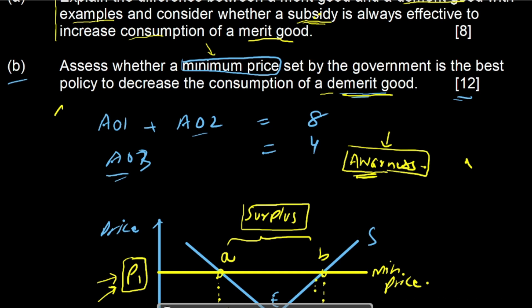For the final judgment, conclude that minimum price is a good way of controlling consumption of demerit goods, however it is not the best policy — because demerit goods are addictive and consumers may not stop purchasing them even at higher prices, since they have inelastic demand. Therefore, awareness campaigns can be much better than minimum price to control the consumption of demerit goods.